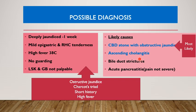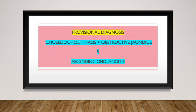While bile duct strictures may be a differential diagnosis, so is acute pancreatitis, which can also cause obstructive jaundice — but the pain in this patient is not sufficient to support a diagnosis of acute pancreatitis. With the clinical findings from history and examination, we come to a provisional diagnosis of choledocholithiasis with obstructive jaundice and ascending cholangitis.